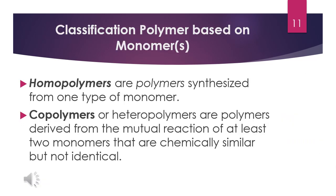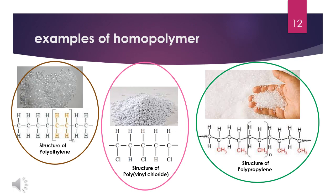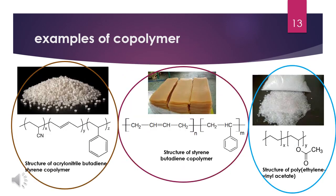Polymers can be classified based on the number of monomers required to synthesize them. They can be homopolymers — polymers synthesized from one type of monomer — or copolymers, which are derived from the mutual reaction of at least two monomers that are chemically similar but not identical. Examples of homopolymers include PE (polyethylene), PVC (polyvinyl chloride), and PP (polypropylene). Examples of copolymers include ABS (acrylonitrile butadiene styrene), SBR (styrene butadiene rubber) polymerized from styrene and butadiene monomers, and PEVA (polyethylene vinyl acetate) synthesized from ethylene and vinyl acetate monomers.